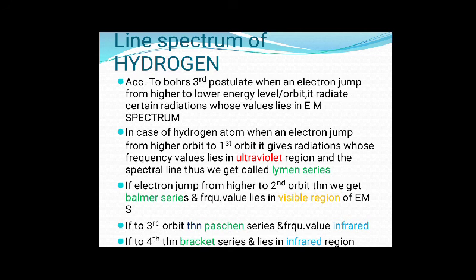If the electron jumps from a higher orbit to the fifth orbit, you will get the Pfund series, and the values of the frequencies also lie in the infrared region.